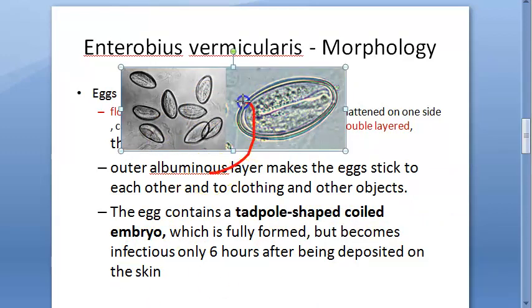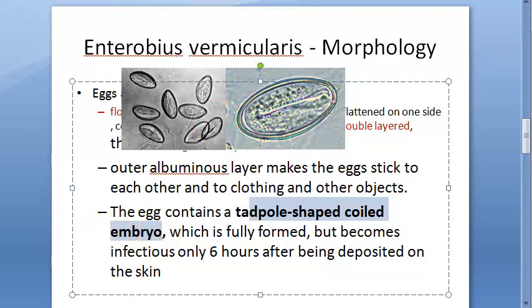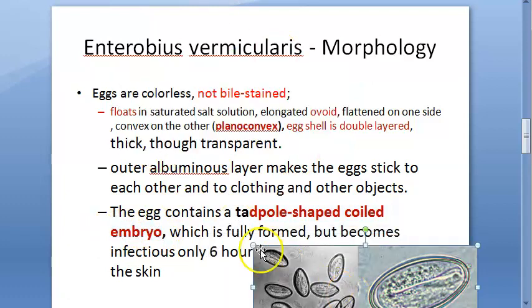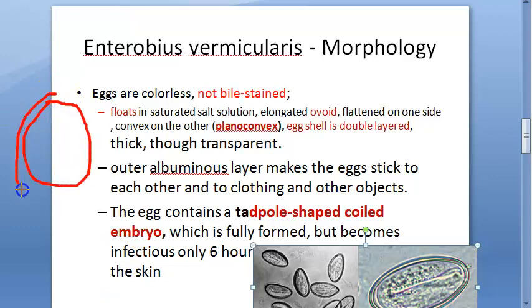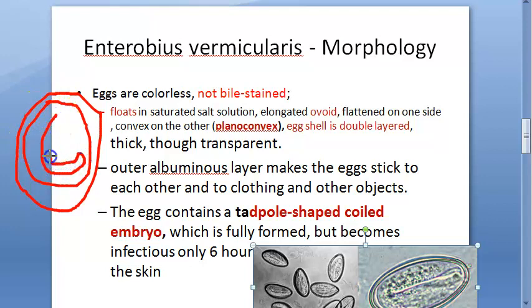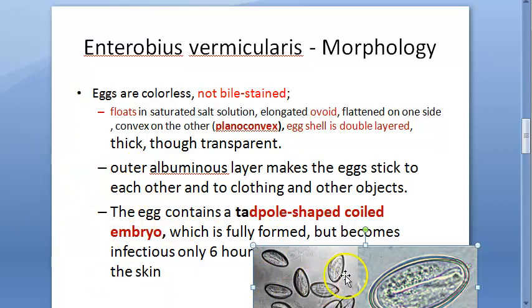The eggs have an outer albuminous layer that makes them stick to each other and to clothing. Inside the egg is a tadpole-shaped coiled embryo enclosed within the double-layered shell. This embryonated egg — containing the tadpole-shaped coiled embryo — is the infectious form.